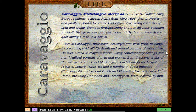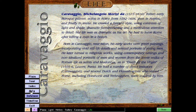Michelangelo Merisi da Caravaggio was an Italian early Baroque painter active in Rome from 1592 to 1606, then in Naples, and finally in Malta. He created a forceful style using contrasts of light and shade, dramatic foreshortening, and a meticulous attention to detail. His life was as dramatic as his art, and he had to leave Rome after killing a man in a brawl. Born in Caravaggio, near Milan, his early works were genre paintings incorporating vivid still life details and sensual portraits of young men. He later turned to religious works, using contemporary settings and non-idealized portraits of men and women from the lower walks of Roman life as saints and madonnas, as in Death of the Virgin. He had a number of direct imitators, and several Dutch and Flemish artists who visited him in Rome, including Honthorst and Ter Brugghen, were inspired by him.